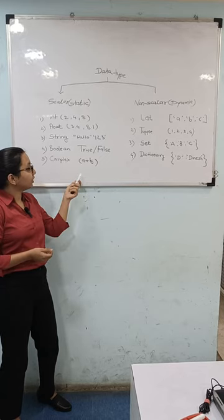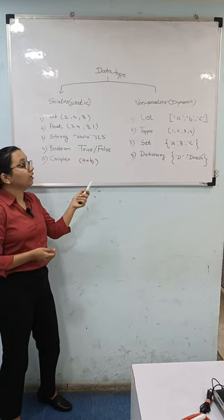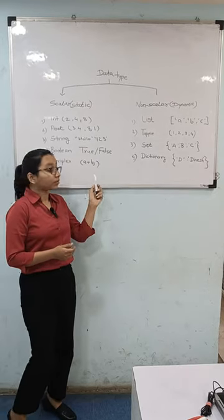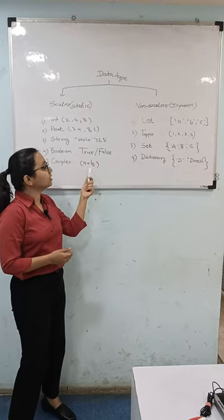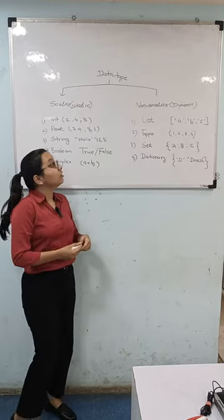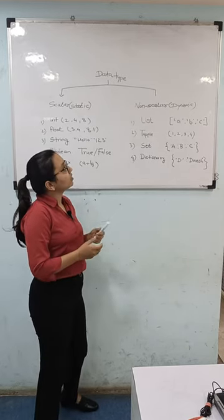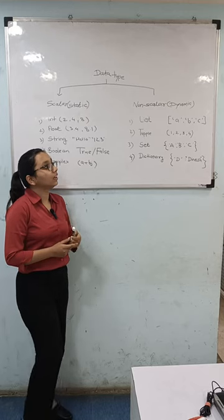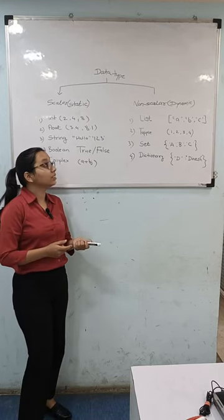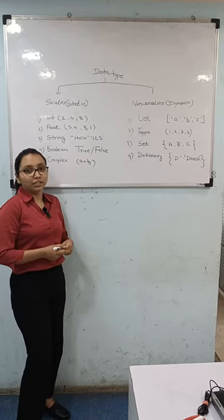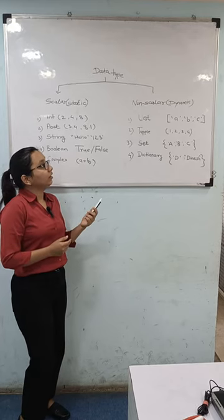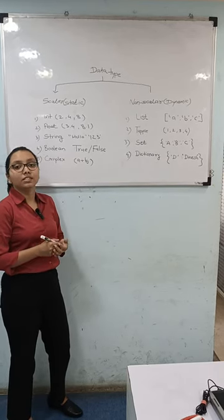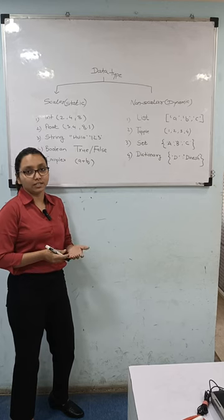In the complex number a plus bj, a is the real number, b is the imaginary number, and j represents the suffix. Coming toward non-scalar data type, the first one is List. List is always declared in square brackets. It is always ordered and changeable, and it is separated by commas. A list inside a list is also called a nested list.